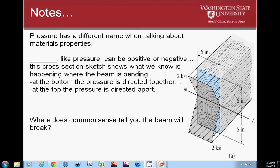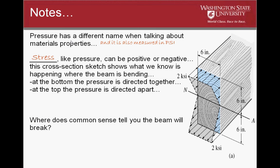When we're talking about pressure and material properties, typically we refer to it as stress. Stress, like pressure, can be positive or negative. This particular cross-section shows that beam we were looking at a few slides ago. It shows that at the top, the pressure is being directed apart, where at the bottom, the pressure is being directed together. So the maximum pressure or stress - the two terms are nearly interchangeable - at the top of our beam we have the maximum tensile strength, and at the bottom of our beam we have the maximum compression strength. You can see that as we get to the neutral axis, we actually have no stress in the neutral axis.